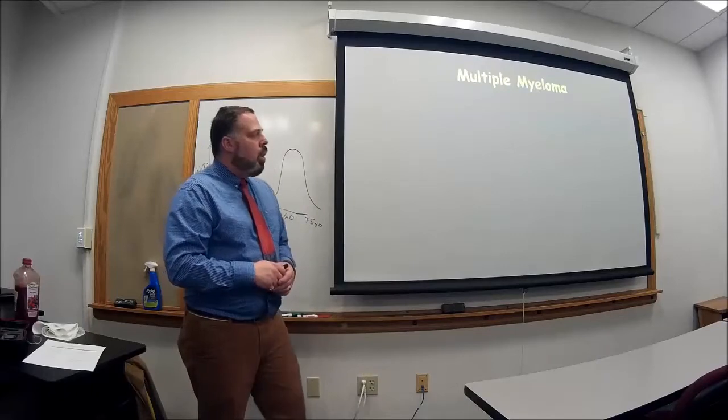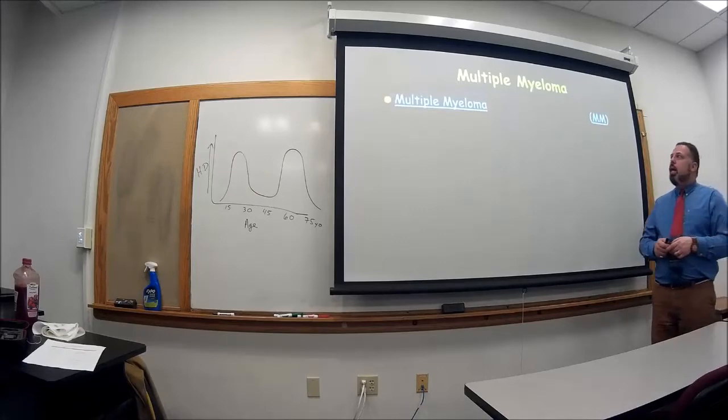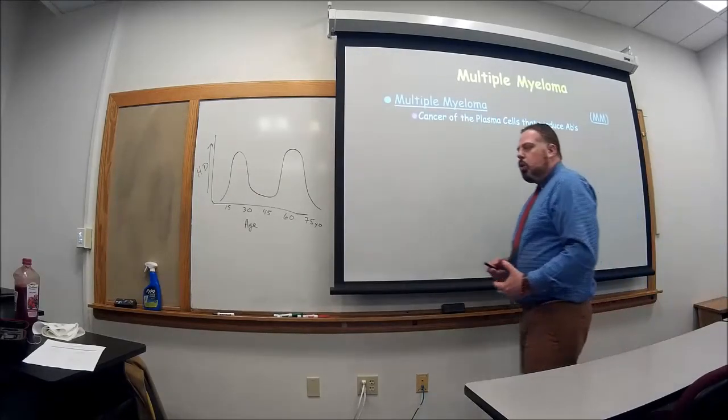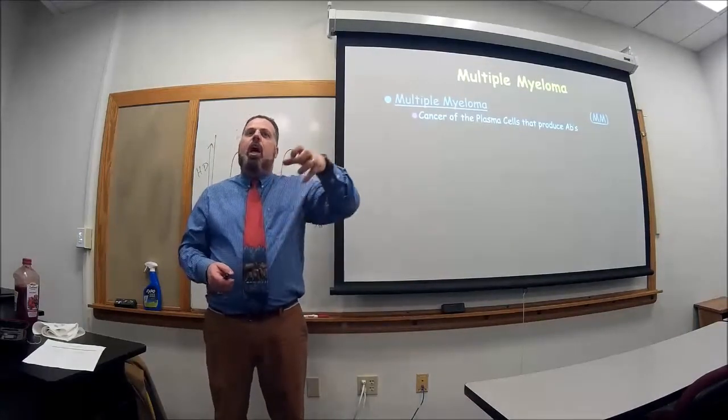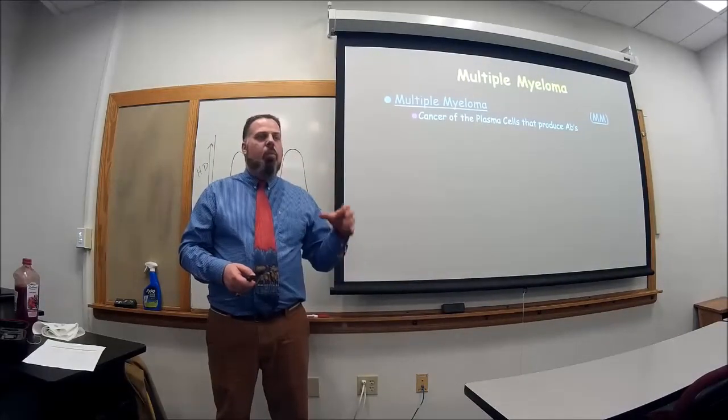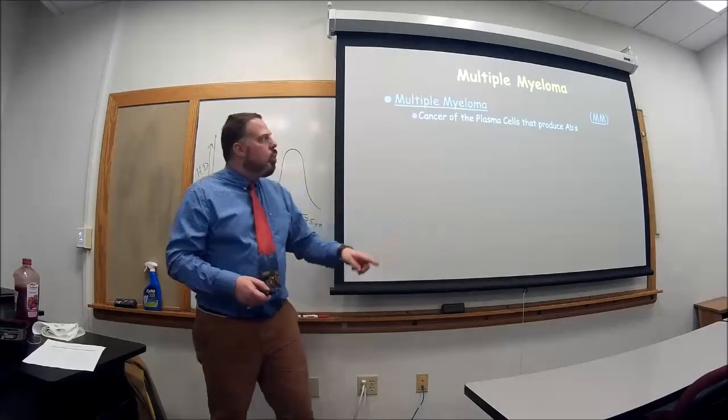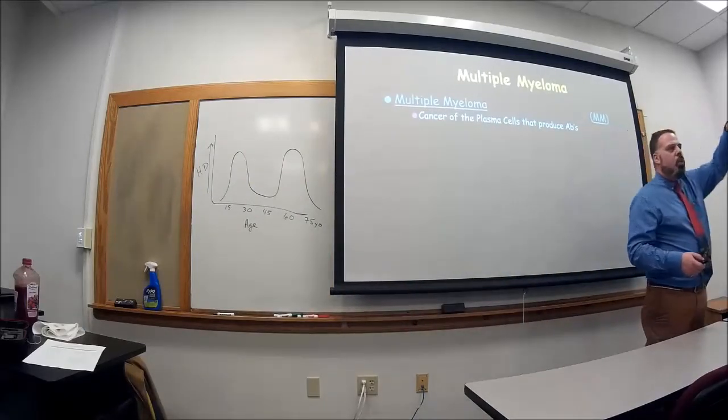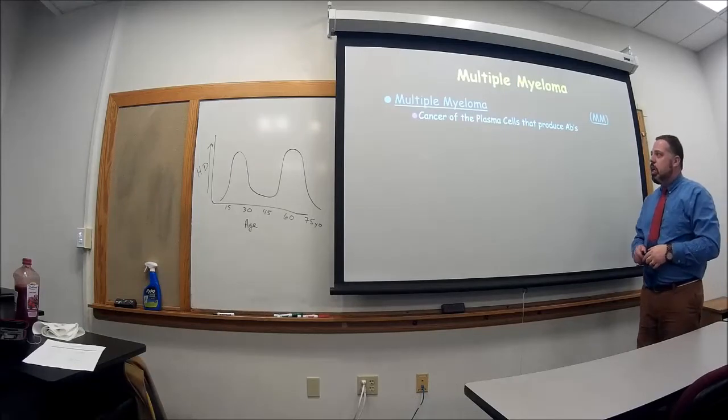So another one that we have is multiple myeloma. Multiple myeloma is a cancer of the plasma cells. So B cells are okay, but B cells become plasma cells, and once it becomes a plasma cell, it produces antibodies. So this is a cancer of the plasma cells. Not of the B cells that were prior to it becoming a plasma cell, but of the plasma cells themselves.